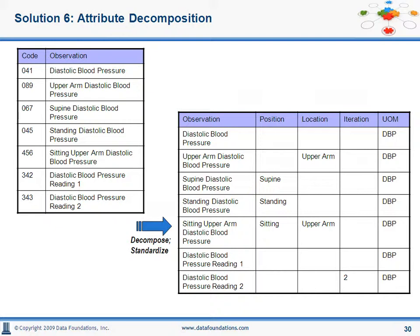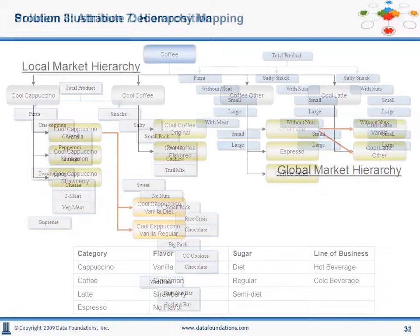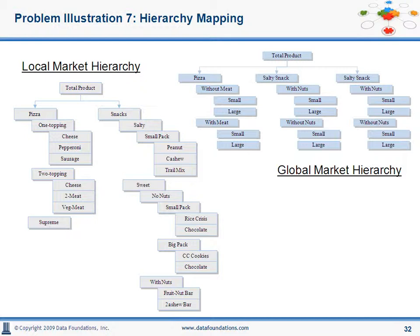Getting back to our earlier problem of domain splits for hierarchies, the problem statement is different and the scenario is different, but the solution is the same. The ideal solution is to assign atomic attributes at the master data entity level, so that any kind of aggregation or hierarchy derivation can be done. This is hierarchy-to-hierarchy management.